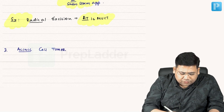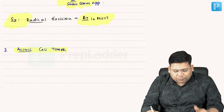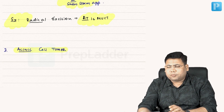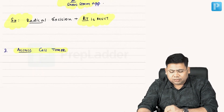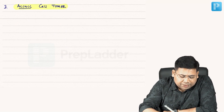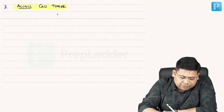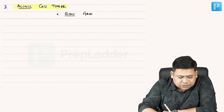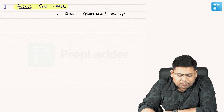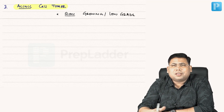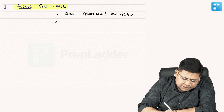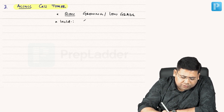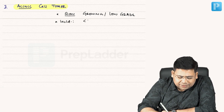When we talk about acinic cell tumor, what are the important points? The first important thing to remember is that this is slow growing and low grade. This means it is not that aggressive. If you talk about incidence, this is less than 10%.